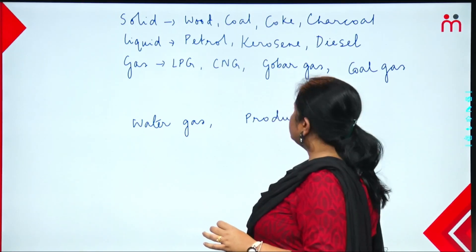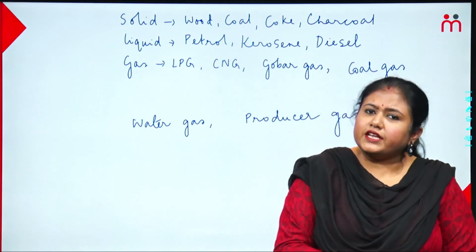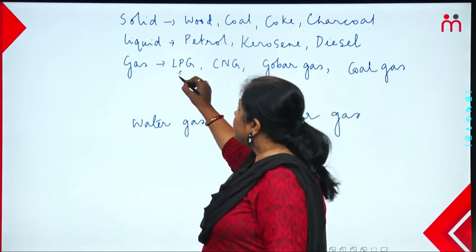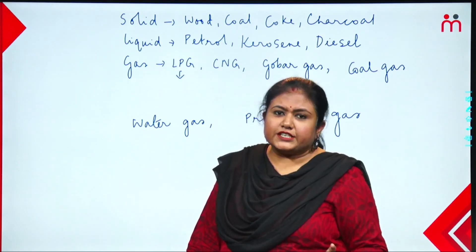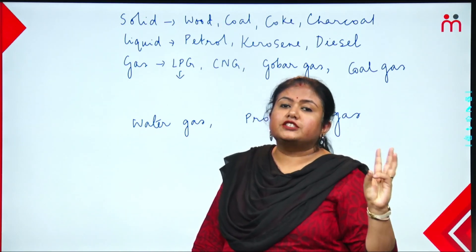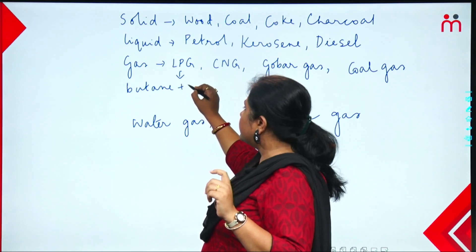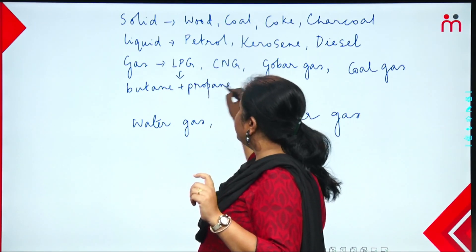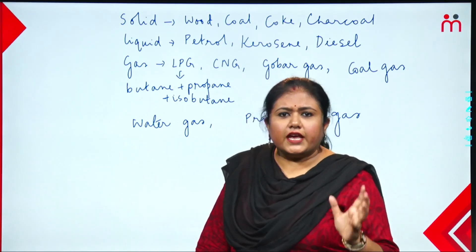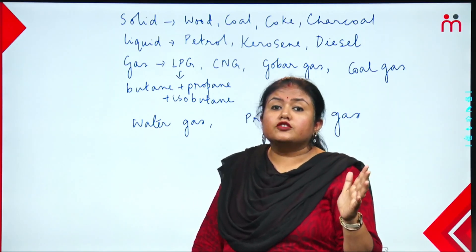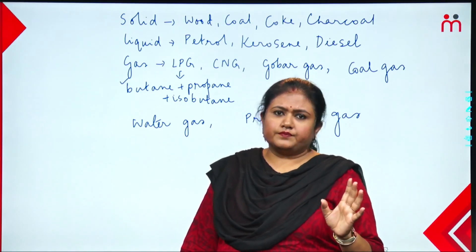Now let's look at the composition of these fuels — what components are present in each fuel. Most importantly: LPG. LPG is the gas we use for cooking. LPG stands for Liquefied Petroleum Gas. LPG is a mixture of butane, propane, and isobutane. The main component of LPG is butane, with propane and isobutane also present.